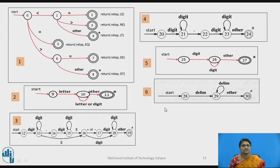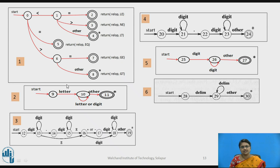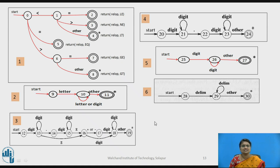These are the six transition diagrams we are considering for our implementation. The first starts at state 0 with its accepting states. The transition diagram for keywords and identifiers starts at state 9. The diagram for fractional and exponential values starts at state 12. State 20 is the start state of the next transition diagram for fractional values, and similarly for whitespace. Remember these start states as they are used in the implementation.